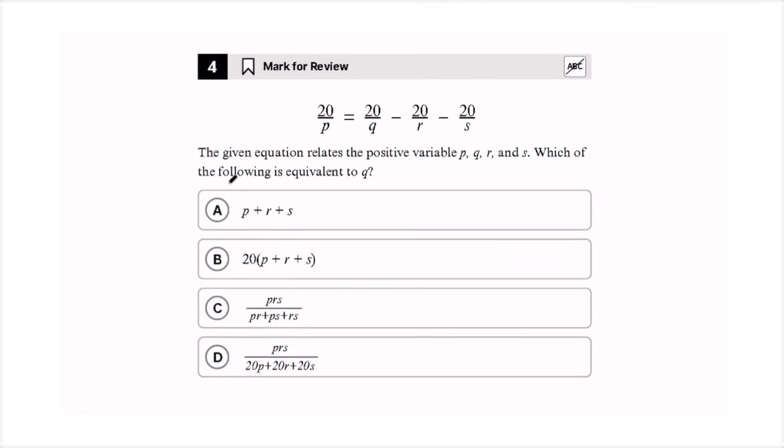The given equation relates to the positive variable P, Q, R, and S. Which of the following is equivalent to Q? So our first step is to multiply this equation by the variable Q. After we do this, we're going to multiply the equation again by each of the following variables. So once we've multiplied it by Q, then we'll multiply it by P.